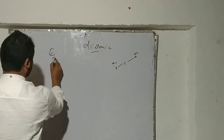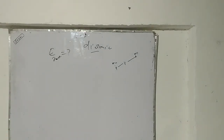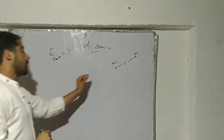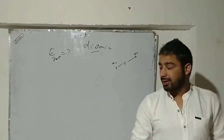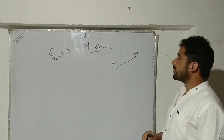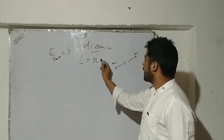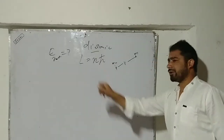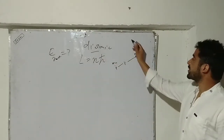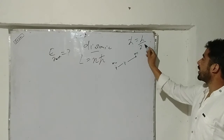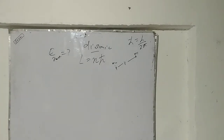To find the rotational energy of this diatomic molecule, we assume that Bohr's rule of angular momentum quantization is applicable. The quantization condition for angular momentum is L = nℏ, where n is the principal quantum number and ℏ (h-bar) is the reduced Planck constant, equal to h over 2π.